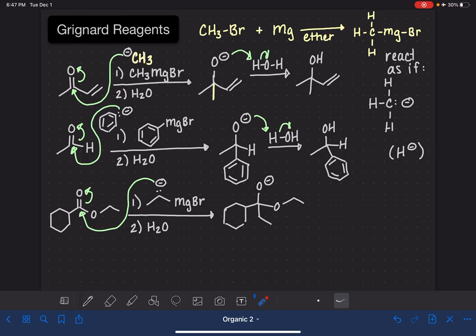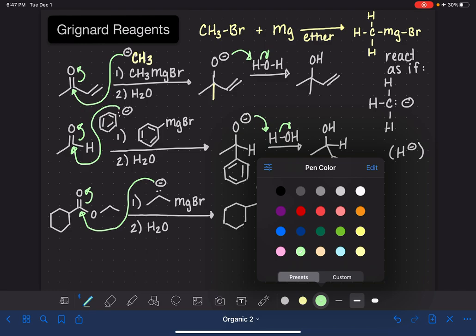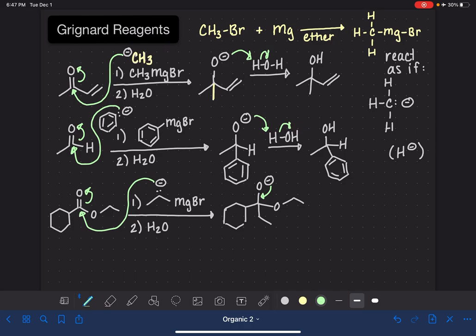Aldehydes and ketones always react in this particular way, just like a hydride reagent. But esters react a little bit different, like we've already seen with hydride reagents. So in our next step, we're going to bring those electrons back down and reform the carbon-oxygen double bond. And we are going to get rid of the OR group from the ester.